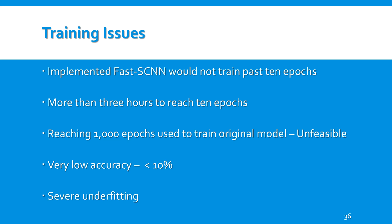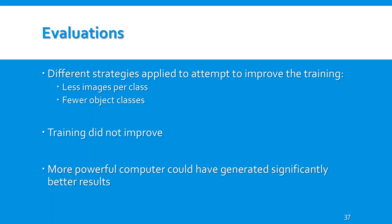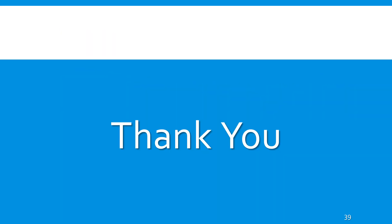Accuracy would not improve past 10%, and there were clear signs that the implemented model was severely under-fitting. As a result, a few strategies were applied to attempt to improve Fast SCNN training, such as using fewer images and fewer classes, but neither improved training. Since the model could not be trained properly, it was not tested on the validation set. Perhaps on a more powerful computer, Fast SCNN would have performed significantly better. Thanks for watching this review of the Fast SCNN paper.